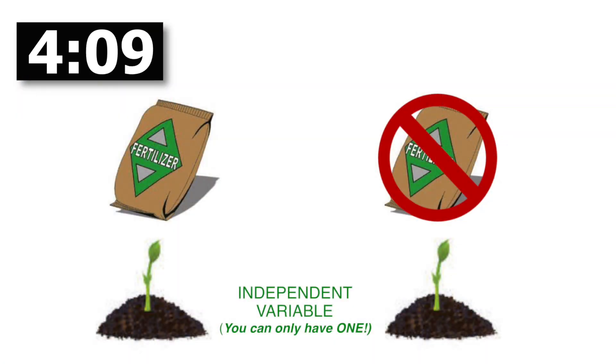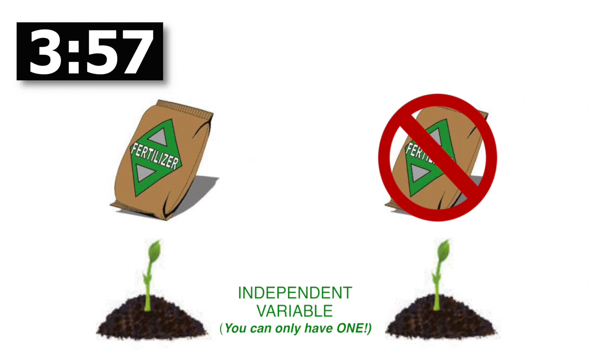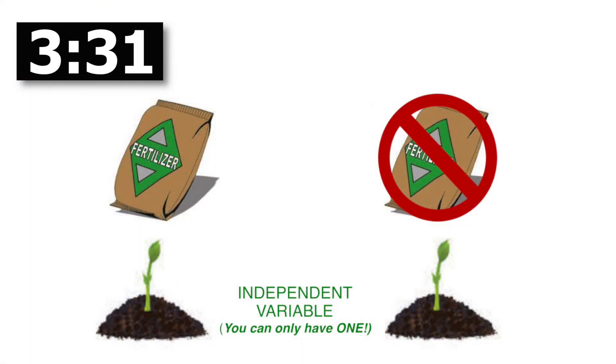The one thing we change in the experiment is what we're testing — that's the independent variable. We're looking at whether fertilizer has an effect on plant growth, so fertilizer is the independent variable: the isolated thing I'm changing to see if it has an effect. I'm emphasizing 'I' because independent starts with I — that's a good way to remember it. You can only change one thing at a time, otherwise you wouldn't know what's really causing the effect.